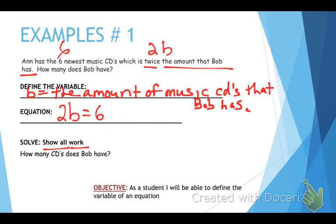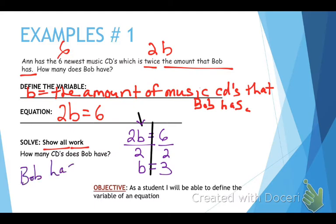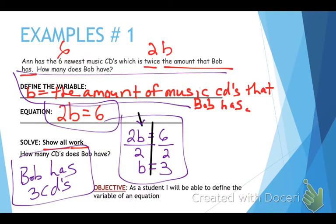And it says show all work. So in order to show all the work, you've got to do very simply, put the equation back up. Go ahead and how do you solve an equation? Well, it's very simple. Draw your line. Identify which side your variable is on, which happens to be right there. How do we get rid of a multiplying by b? Well, you divide by two from both sides. And you will get b equals three. How many CDs does Bob have? Bob has three CDs. And that's it.